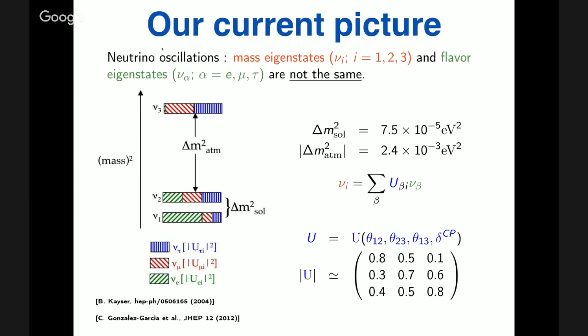Why do neutrinos oscillate? The mass eigenstates, which are the vacuum propagation eigenstates, and the flavor eigenstates are not the same. They are related by the PMNS matrix, or lepton mixing matrix U. This matrix has a very large off-diagonal component allowing large flavor transitions. We parameterize it as a function of three angles and one CP phase. The angles have been measured with reasonably good accuracy, but the CP phase is yet to be measured.